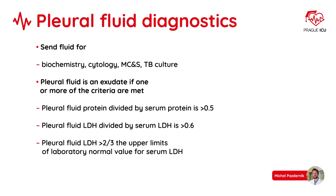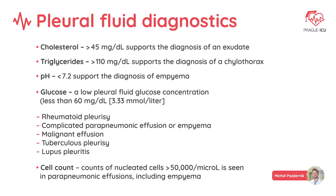After thoracosynthesis, send fluid for biochemistry, cytology, microbiology or TB culture. Check the results from biochemistry to diagnose the etiology of fluid — if it is exudate or transudate. Some hints that may help you establish the correct diagnosis include looking at levels of cholesterol or triglycerides, pH, glucose level or cell count.